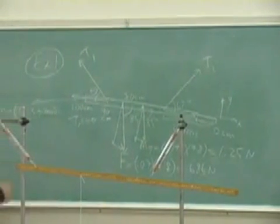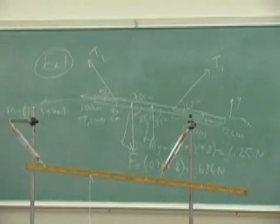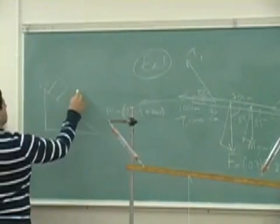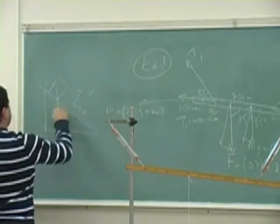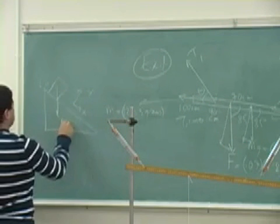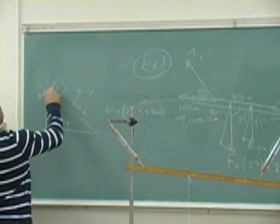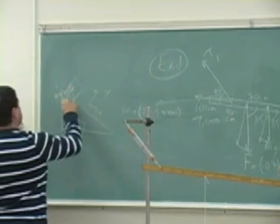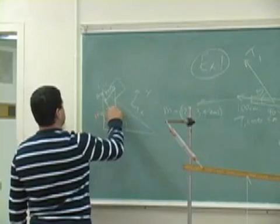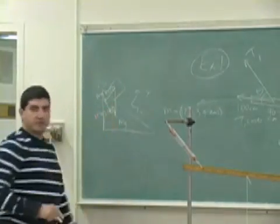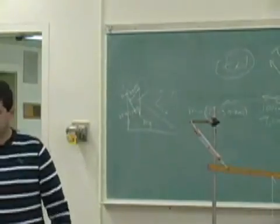Just like an inclined plane — you have a block, you tilt the X and the Y, you have MG. This is MG cos, and then this is MG sine. So you should know that by now — that's your bread and butter inclined plane problem.